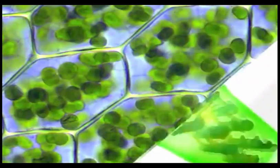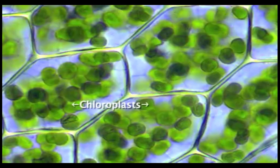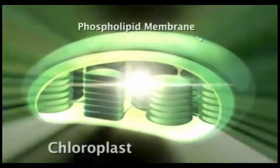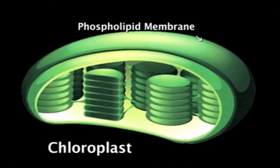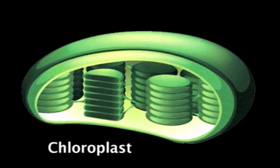A typical leaf cell contains from between 10 to 100 chloroplasts. Each chloroplast is enclosed by a double-layered phospholipid membrane. Within this outer membrane lies the fluid-filled stroma, where the light-independent reactions of photosynthesis take place.